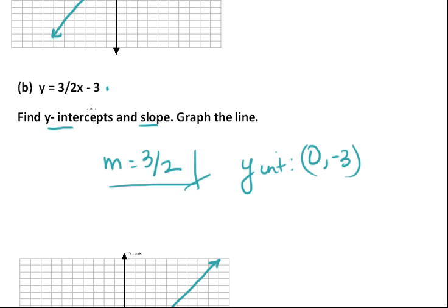In slope-intercept form, the constants that are given to you are your slope and your y-coordinate of the y-intercept. Once you've gotten your y-intercept point, you can plot that and then use the slope value to find other points on the line.